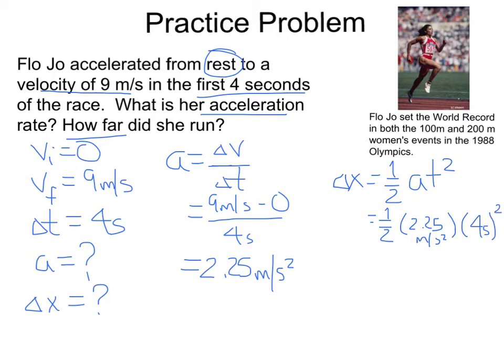So we're going to square 4, which is 16. Half of that would be 8 times 2.25. And if you do that on your calculator, you'll get 18 meters is the distance she ran to go from a velocity of 0 to 9 meters per second.